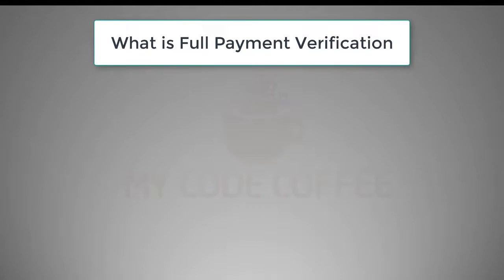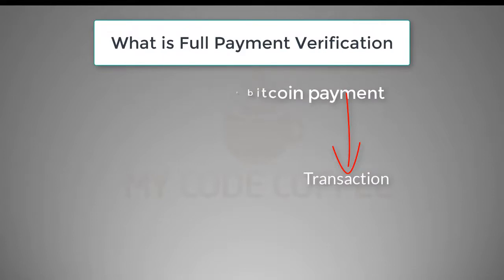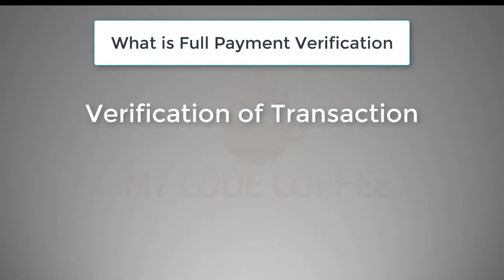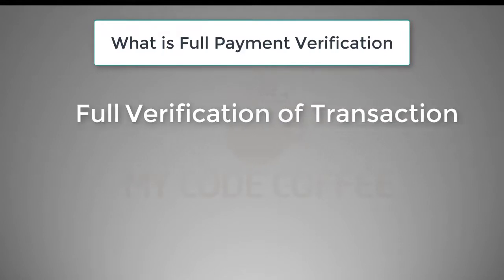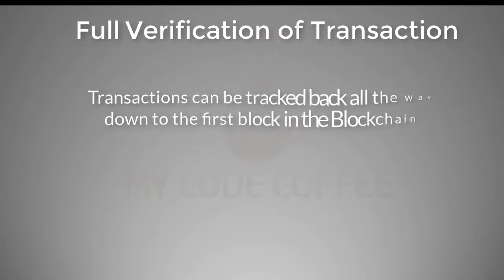So what is full payment verification? As the name suggests, it is the verification of a payment made in Bitcoin. Payment in the Bitcoin blockchain system is essentially a transaction. So it is the verification of a transaction. Full verification means the transaction can be tracked all the way back to the first block in the blockchain. There is also something called simplified verification, which we will see in the next chapter.